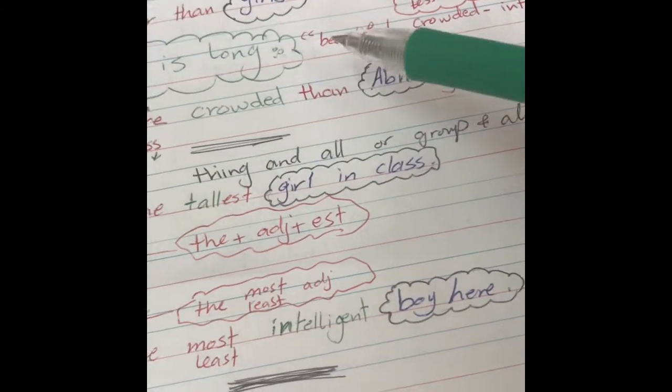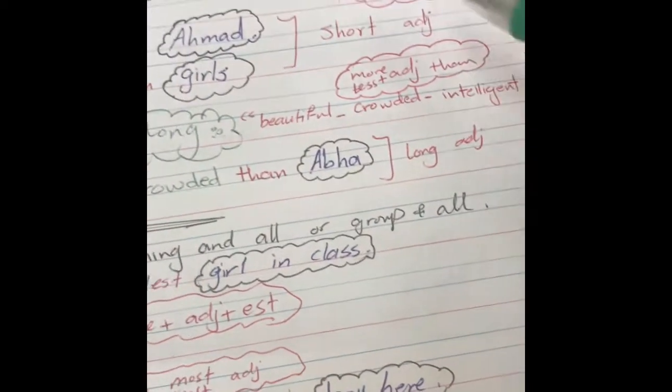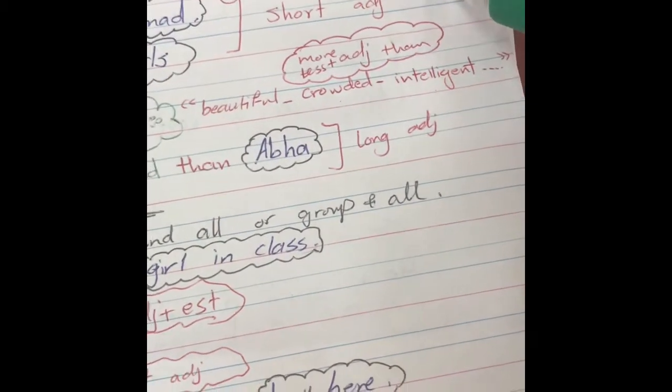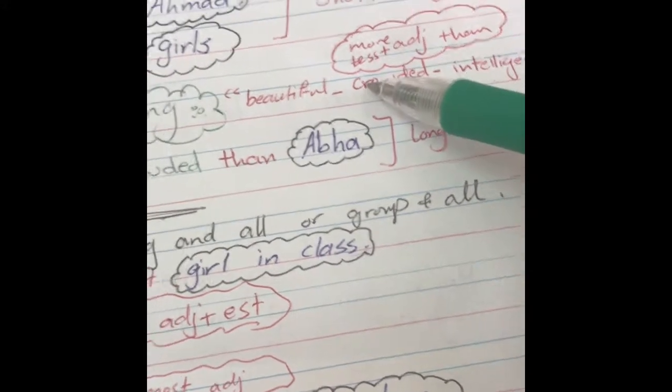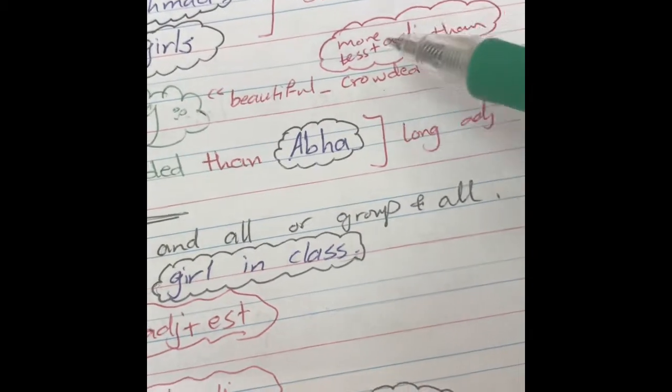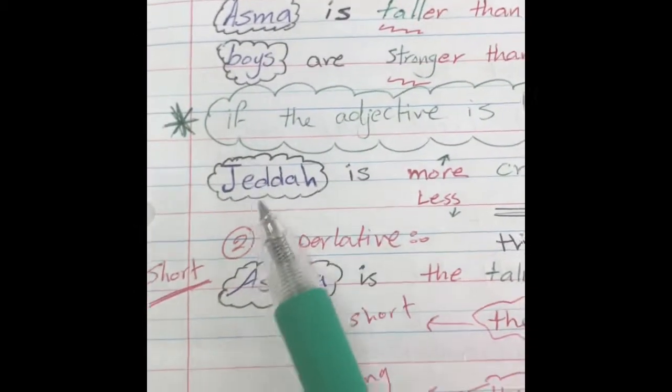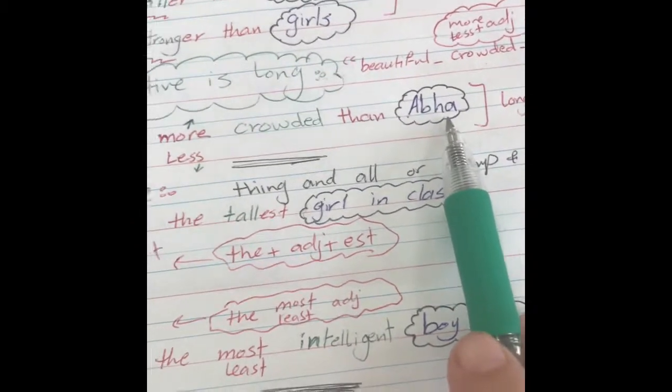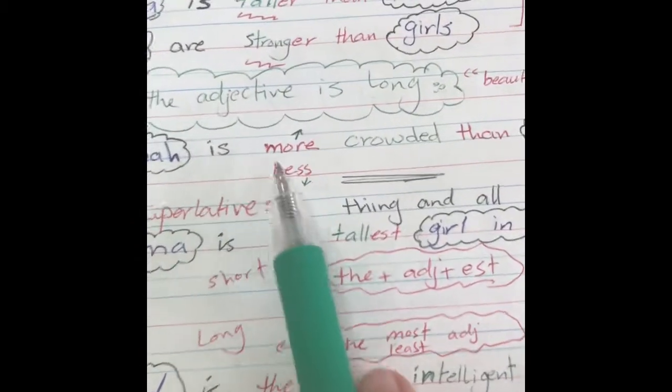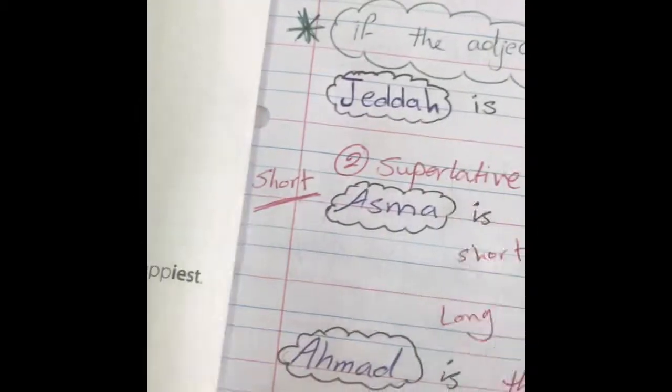Number two, if the adjective is long, like beautiful, crowded, intelligent, what do I do? Not er than, but more or less, then adjective, then than. So here is more or less than. Asma is more crowded than Abha.